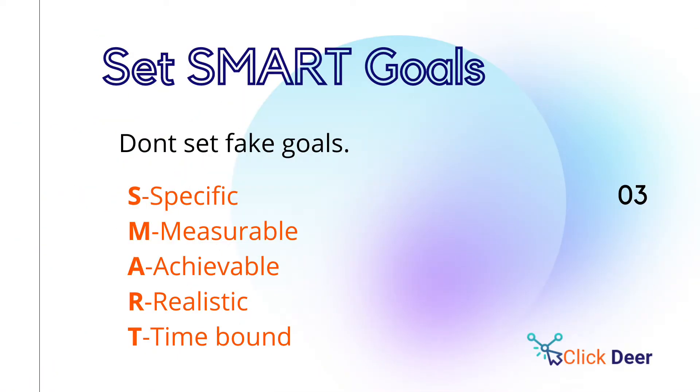The key thing here is that your goals should be SMART — Specific, Measurable, Achievable, Realistic, and Time-bound. For example, you can set up a goal like: 'I want to increase organic traffic by 25 or 40 percent within the next 6 or 12 months.' Your goals should not be fake; they should be measurable, realistic, attainable, and time-bound.